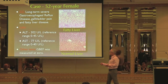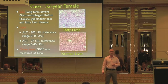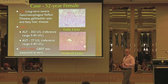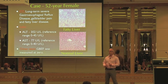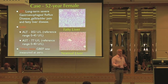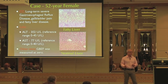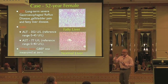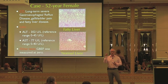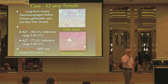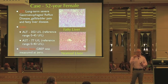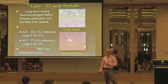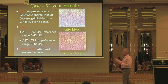She also had a gallbladder ejection fraction done. That's where they do a HIDA scan with a radioactive dye that's been injected, and then they give an injected bolus of cholecystokinin. Cholecystokinin stimulates the gallbladder to contract. They take a measurement of the gallbladder before and after contraction — this shouldn't be any lower than about 27%. Her ejection fraction was zero.